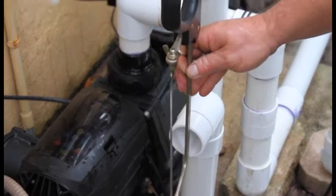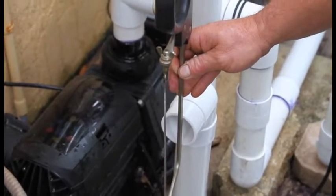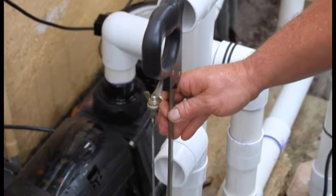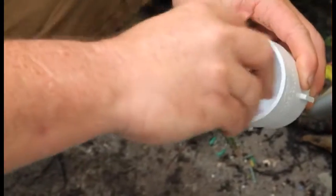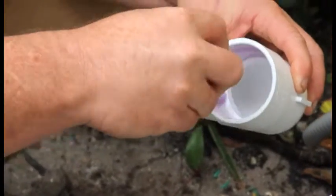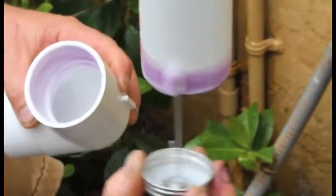Be sure they are aligned perfectly to one another so that the chamber will fit properly. Next, use PVC glue on the pipe and the street elbows and carefully align them and glue them together.